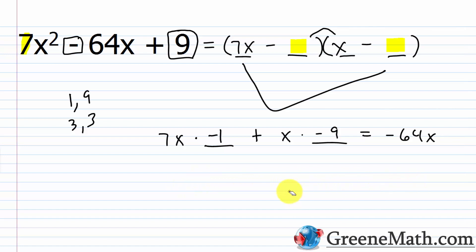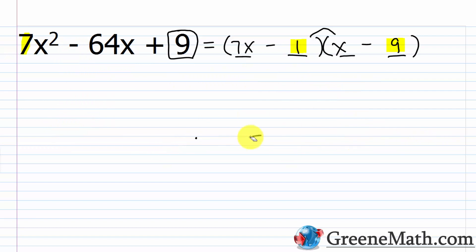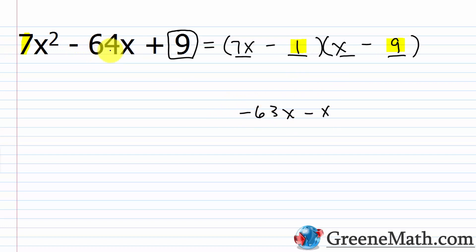Now I flip them and try negative 9 and negative 1. 7x times negative 9 is negative 63x, and x times negative 1 is negative x. Summing those gives negative 64x — that's correct! Since 7x multiplies negative 9, we get (7x - 9), and x multiplies negative 1, giving (x - 1). Checking with FOIL: 7x² outer -63x, inner -x, combining to -64x, and (-1)(-9) = +9. Correct.